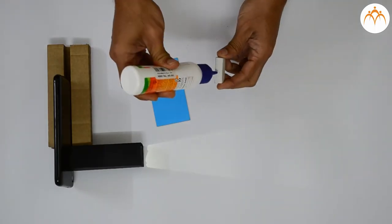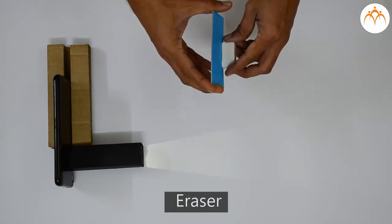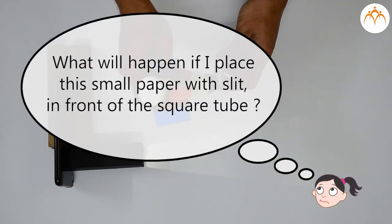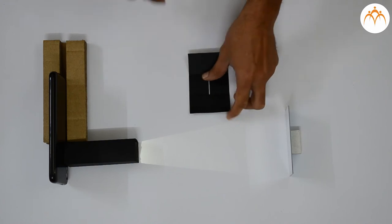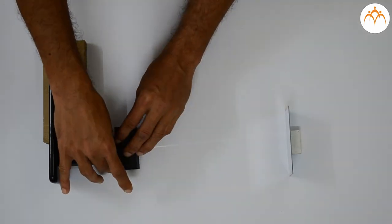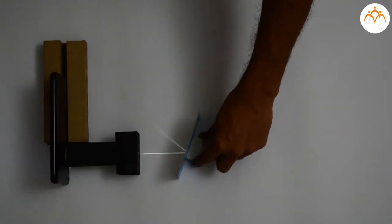Let us fix this mirror to eraser and place it in front of the tube. What will happen if I place this small paper with slit in front of the square tube? Small streak or ray of light can be seen emerging from the light source. We can now rotate mirror and find out the nature of reflected rays.